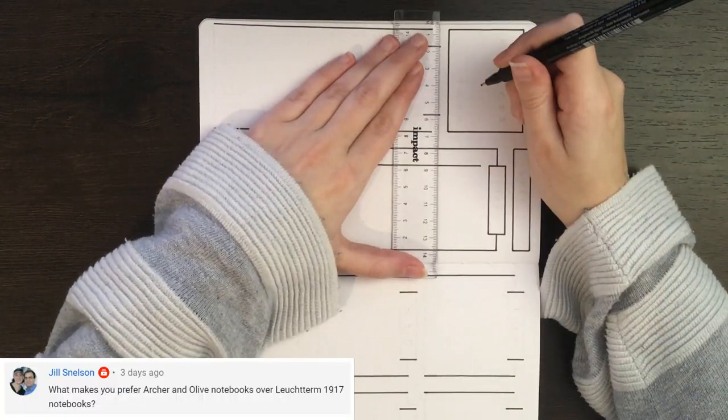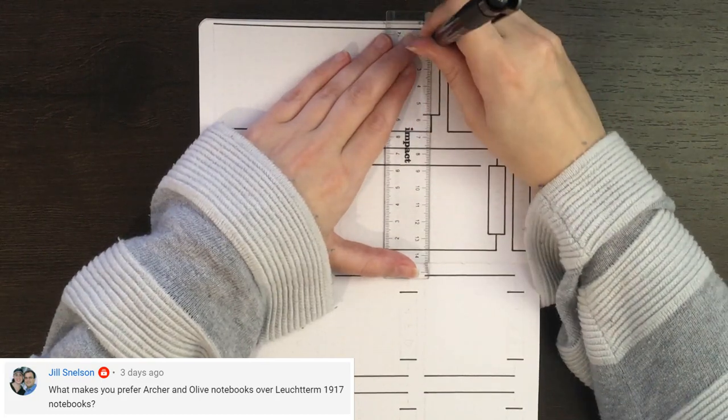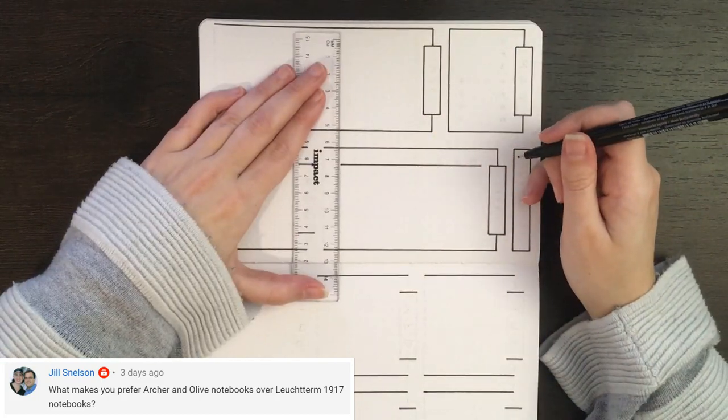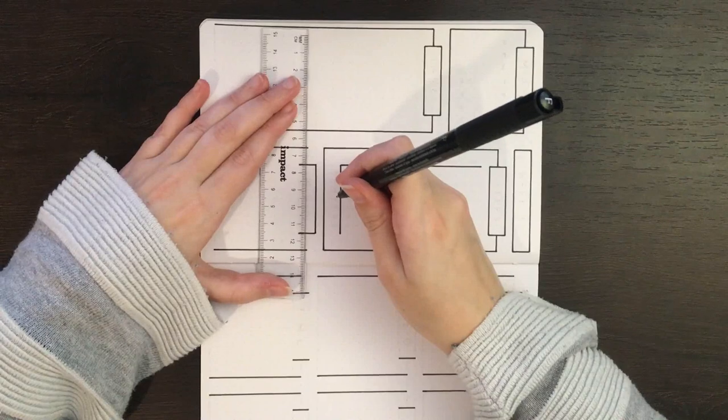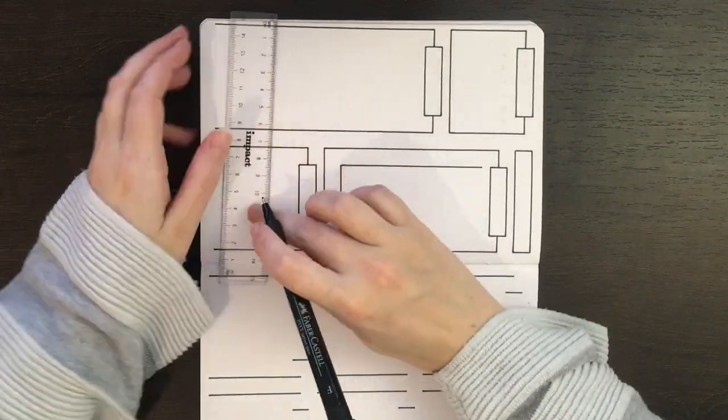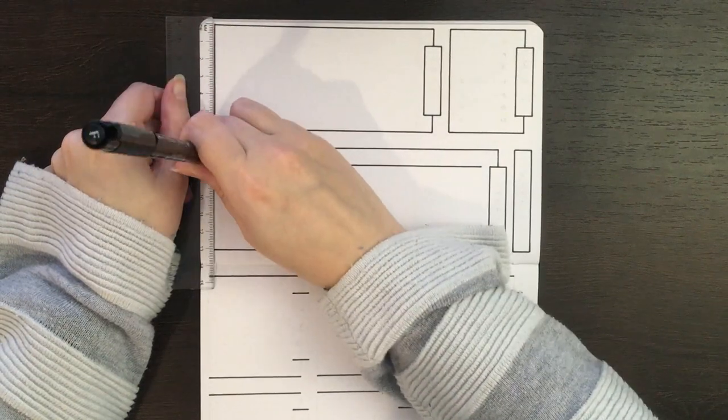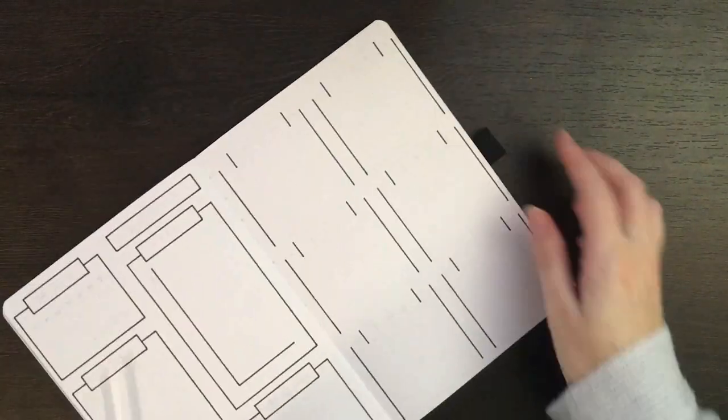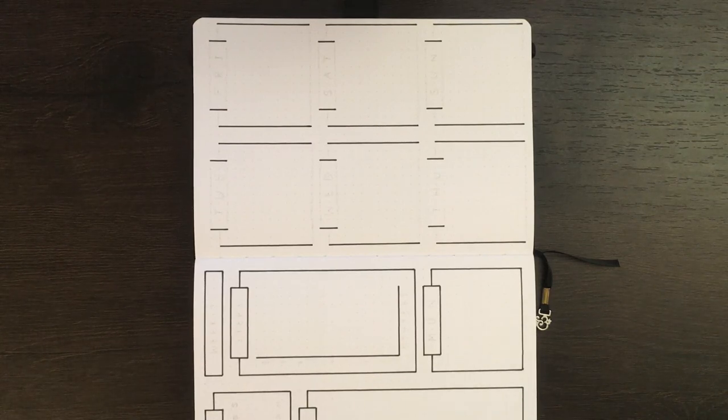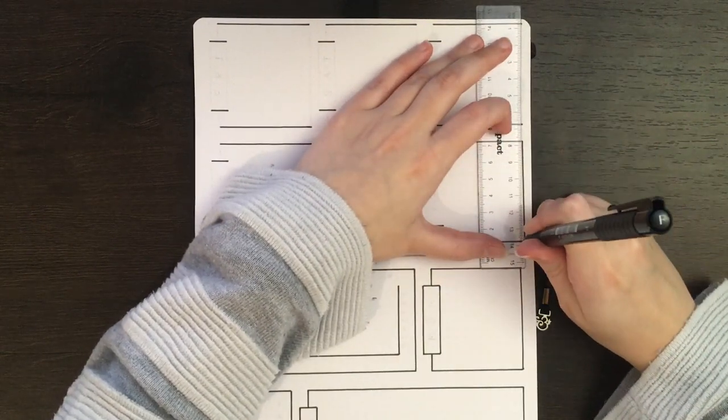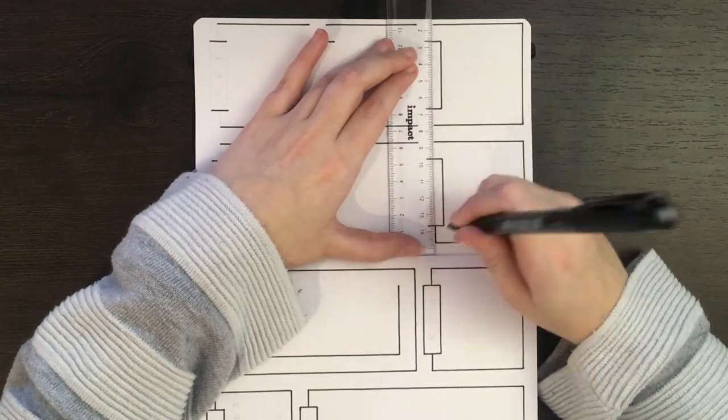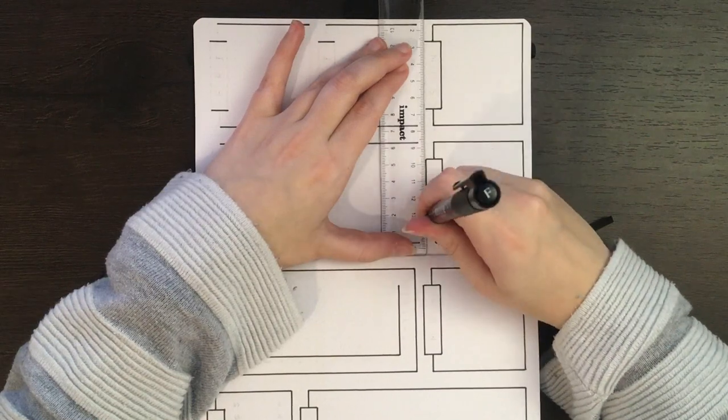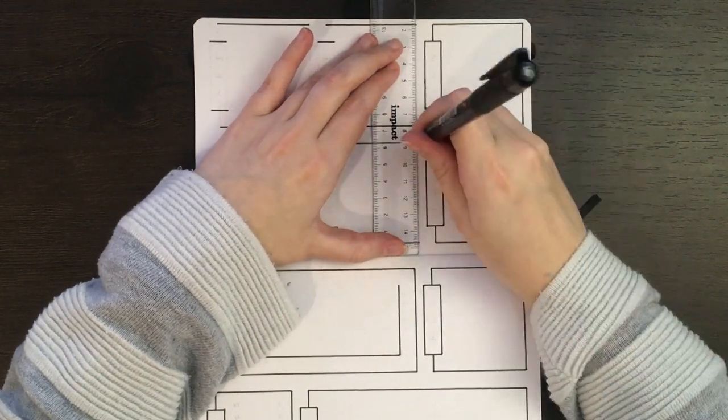This question is related to Jill's question, which was, what makes you prefer Archer and Olive Notebooks to the Leuchtturm 1917 notebooks, and that one would just have to be paper quality. Personally, I find that with the LT 1917s, the paper is just too see-through for me to find the journal enjoyable to use. I have preferred the Archer and Olive because the paper is a lot thicker, though one issue I found with the Archer and Olive is that, because the journal is a bit more expensive, I feel like the things that I should be putting in there should be a lot more aesthetic. That was likely part of the reason that I had my planner slump in February and March, because I kind of felt that the spreads I was making weren't really doing this quality paper justice.